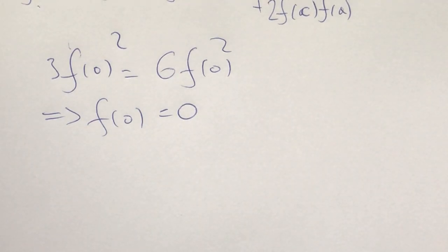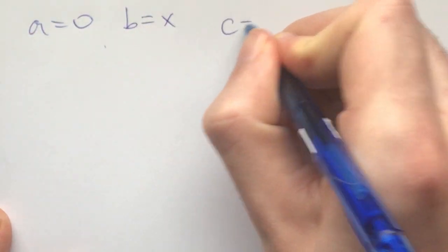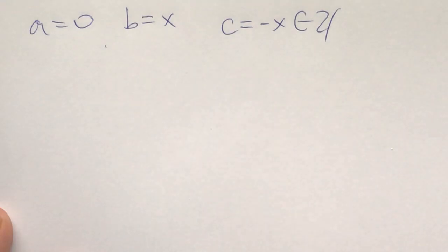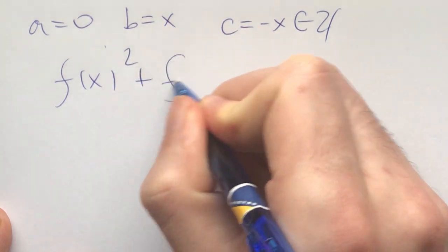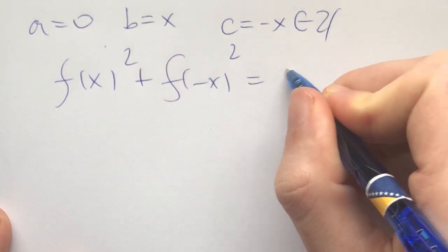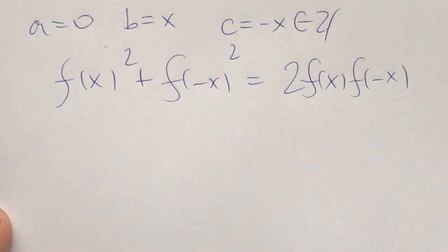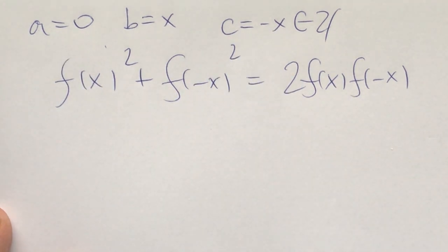The next thing to plug in is to set one of a, b, or c to 0. Let's say a = 0, b = x, and c = −x, where x is some integer. From here we get that f(x)² + f(−x)² = 2·f(x)·f(−x). The other terms have been zeroed out by f(0) = 0.